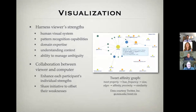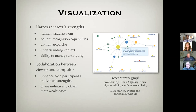From our perspective, visualization is a collaboration between the viewer and the computer, and we're trying to enhance each participant's individual strengths. Computers are very good at certain things, and viewers are very good at certain things. In particular, the human visual system has capabilities we'd like to harness—things like pattern recognition, which is very difficult to describe to a computer algorithm but something humans pick up on very quickly, understanding domain expertise, and the ability to manage ambiguity. We let the computer do what it's good at and let the human do what it's good at, in a mixed-initiative interaction environment where they play off each other's strengths.